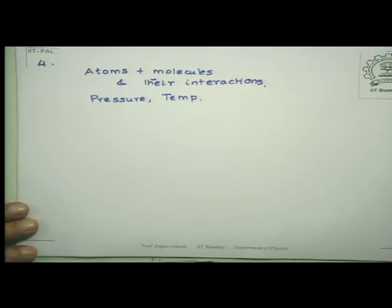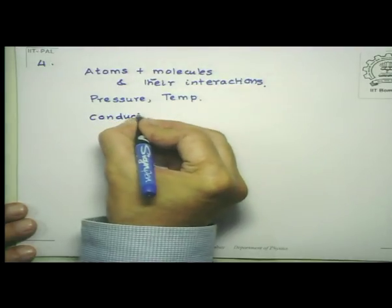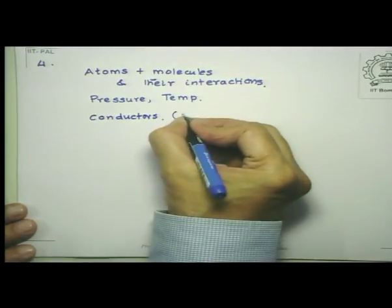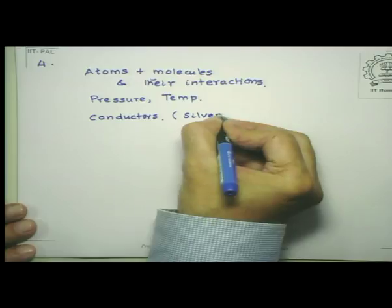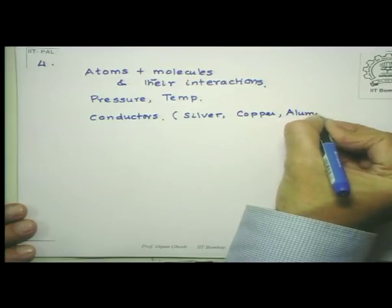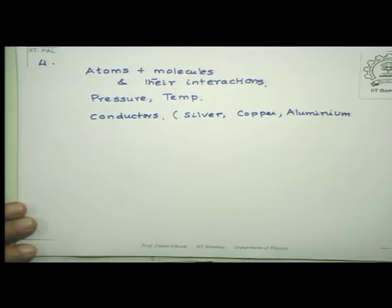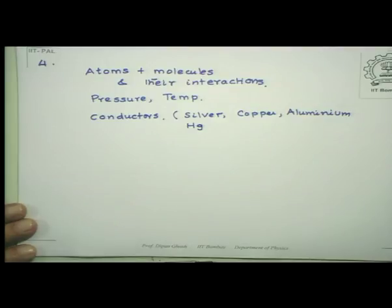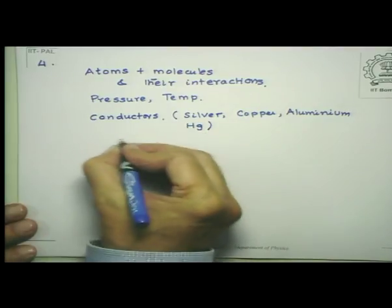Conductors are typically substances such as silver, copper, and aluminum — mostly in solid state. Mercury, which is liquid at normal temperature, is an exception. These are materials which readily conduct electricity, provided they are brought into a closed circuit and an electric field is applied.